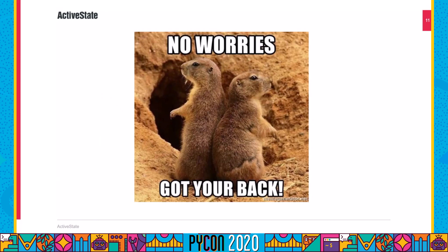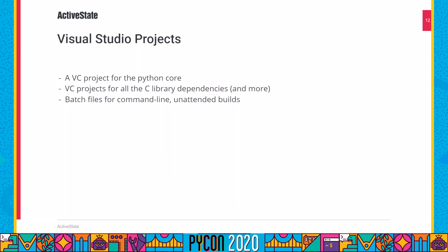Well, don't worry — the Python build system has you covered. The Visual Studio Python build system is structured with a number of Visual C++ projects: one for the core itself, a bunch of tests and ancillary projects, and a project each for each of the C library dependencies — OpenSSL, TclTK, BZIP2, FFI, etc. These projects allow you to build Python and its dependencies from source, and there are a number of batch files for automating the build from the command line, which ActiveState leverages to run unattended builds.